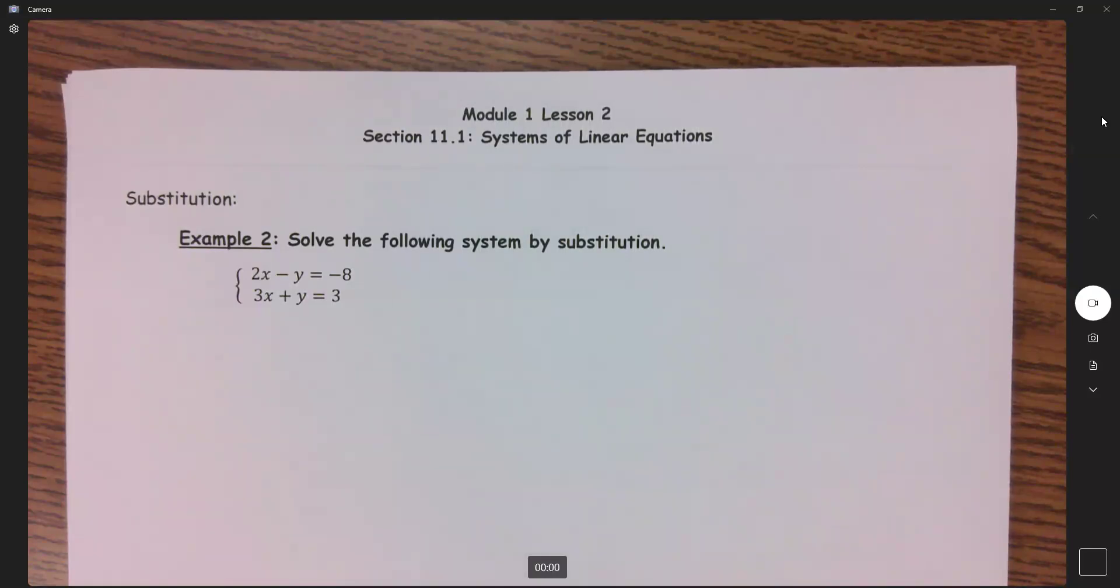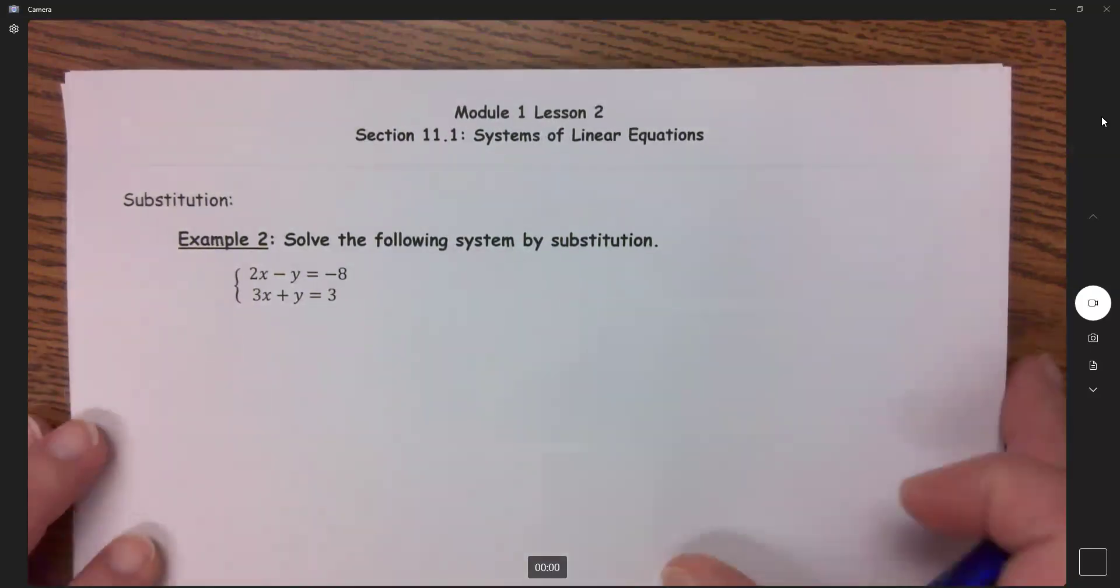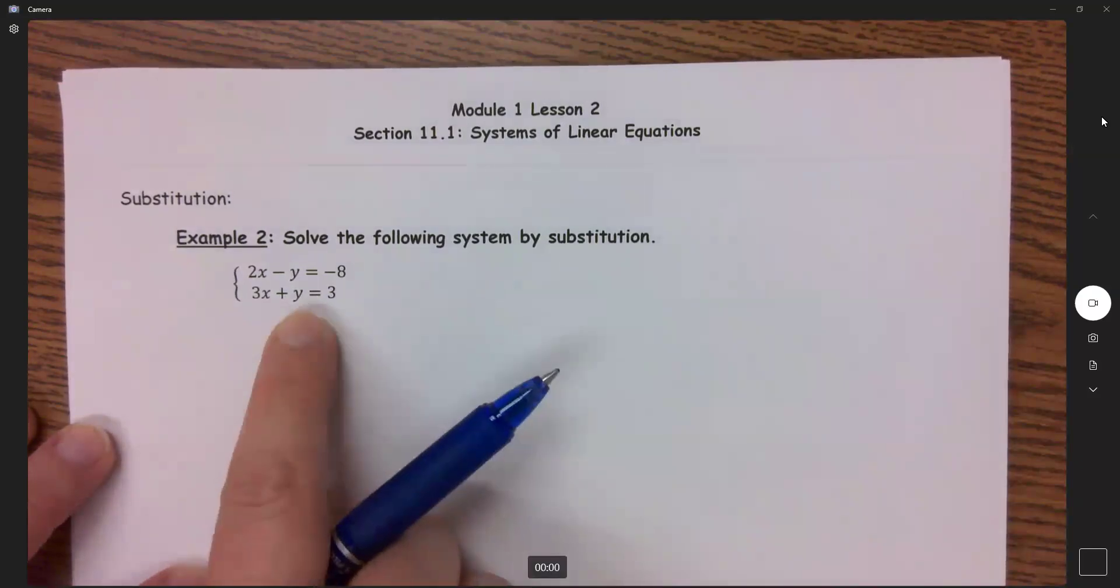Example two says solve the following systems by substitution. So what I need to do is I need to solve for one of these variables. The easiest variable to solve for is this positive y.